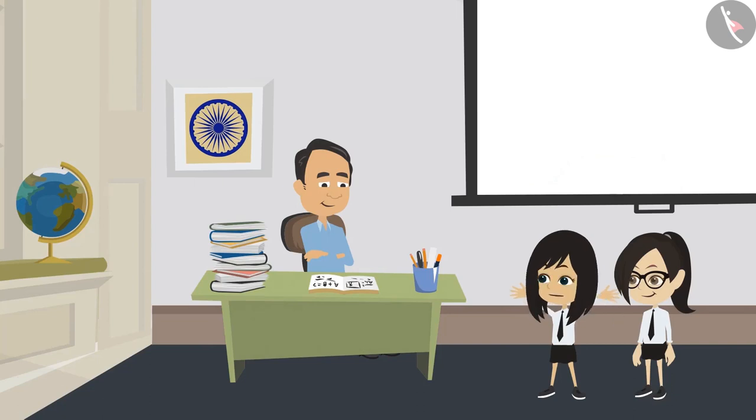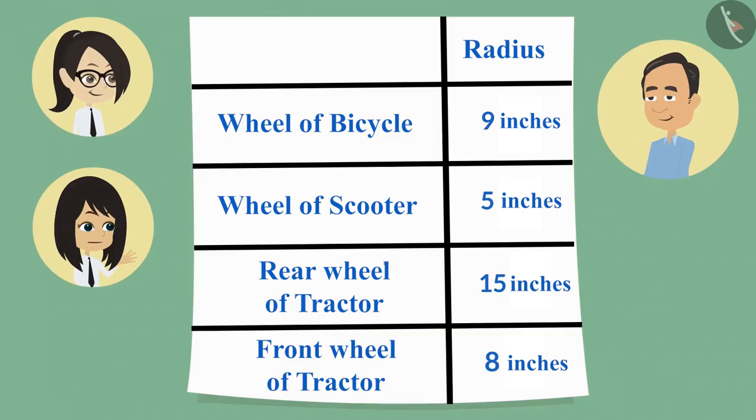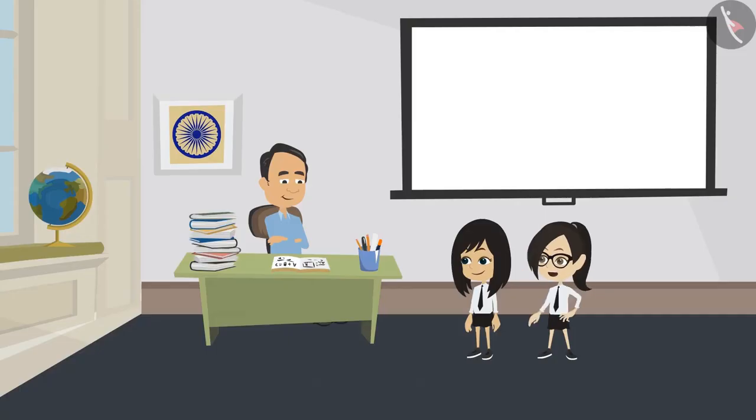or the wheel of the bicycle. Please tell. Sir, the wheel of a bicycle is bigger because its radius is nine inches, which is more than the radius of the front wheel of the tractor, which is eight inches. This means